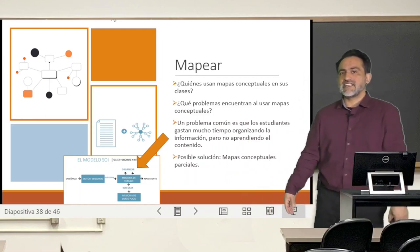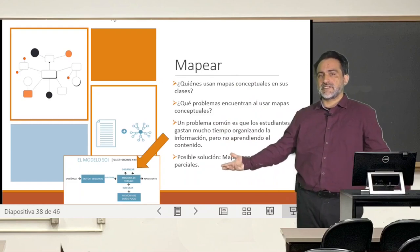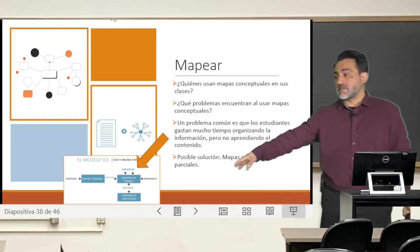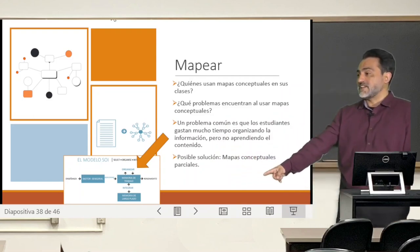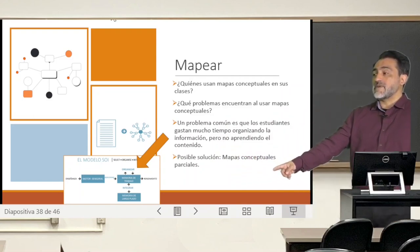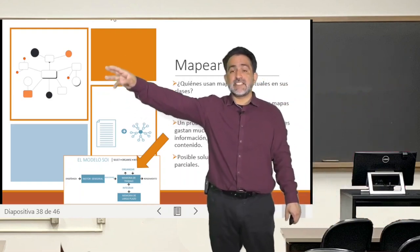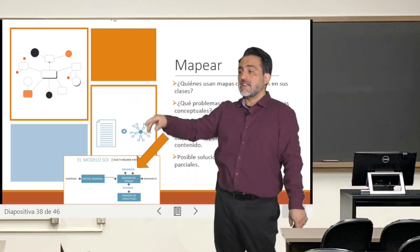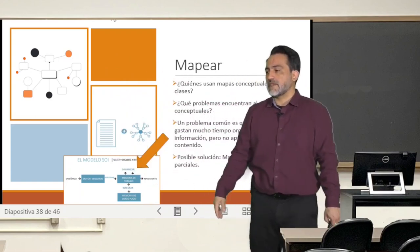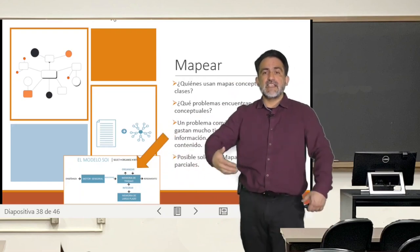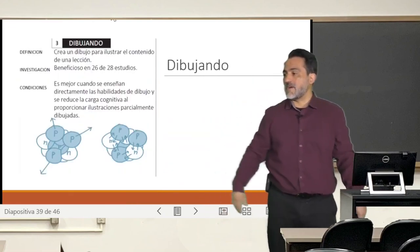In the sense that if one has a very large map, sometimes students get lost because they don't manage all the information. So one way to address that habitual problem when working with concept maps is to use partial concept maps — maps that are partially filled with some ideas — which students can then connect with, making it easier to work and gradually introducing them to concept mapping.